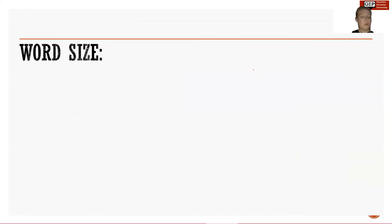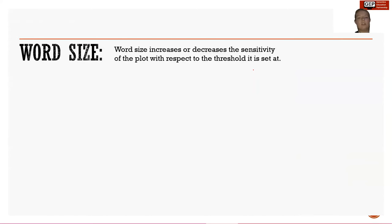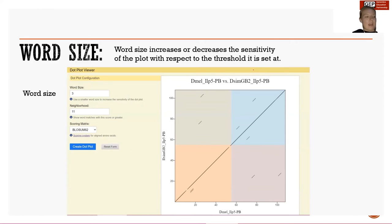Before going more into depth on dot plot patterns, it is important to note word size. Word size is important because depending on what you have set, we might see different things happening in the background of our dot plot. Word size essentially increases or decreases the sensitivity of the dot plot with respect to the threshold it is set at. We see word size and below it we see neighborhood — also referred to as threshold — which is based on a scoring matrix that creates a score for each position of the word size.